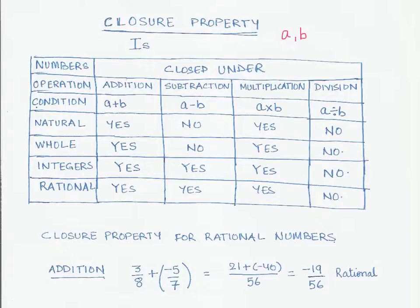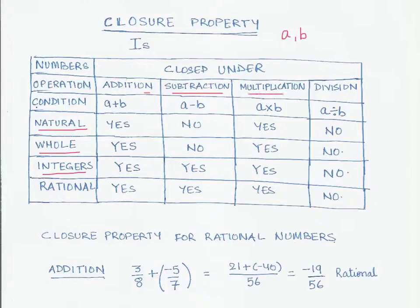That is what the closure property is. What I have here is a table — the first column gives us the different types of numbers. We will be reviewing the closure property for natural numbers, whole numbers, integers, and rational numbers, studying it for the four basic operations: addition, subtraction, multiplication, and division.